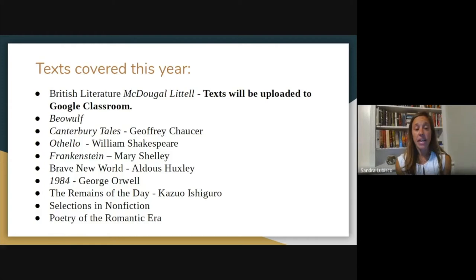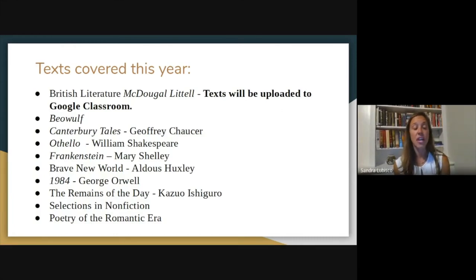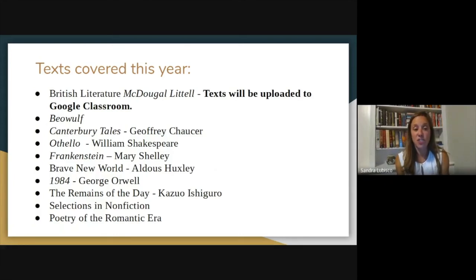We move into Frankenstein after the first half of the year. Then we'll be getting to some dystopian novels — Brave New World and 1984 — really looking at the future and the dangers of putting too much reliance on technology. We'll talk a lot about our virtual world, and we'll definitely have a lot to discuss when we get into that unit.